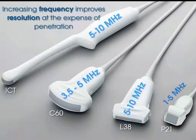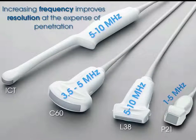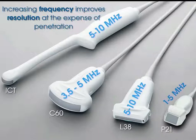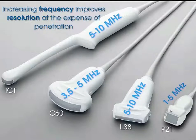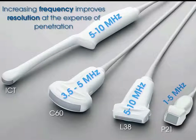Transducers themselves have different frequencies they can toggle between. Generally, higher frequency transducers have better resolution but cannot penetrate as far into the body. A high frequency linear transducer is good for superficial structures when depth of penetration is not a concern, whereas a lower frequency transducer is good for penetrating deeper into body tissues. You always want to use the highest possible frequency that will get you to the depth of interest.